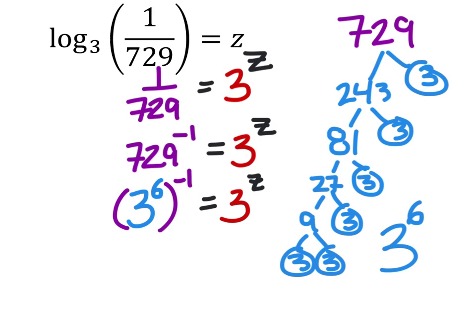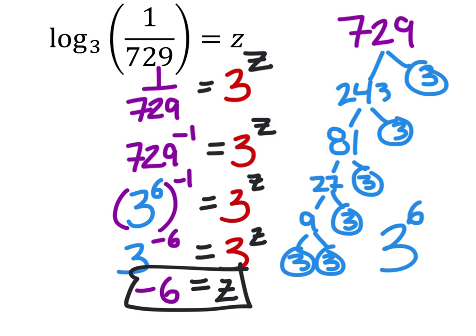Then using the power of a product rule I can multiply the 6 and negative 1. So I have 3 to the power of negative 6 equals 3 to the power of z. So I have those common bases I can rewrite this. I've got negative 6 equals the z and that would be my final answer of course.